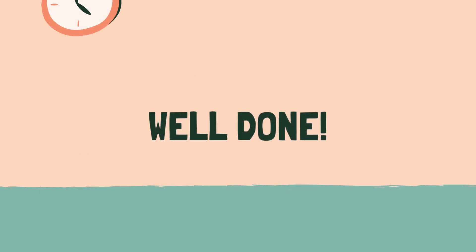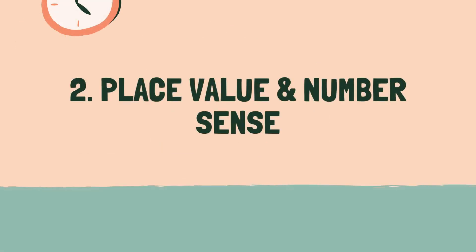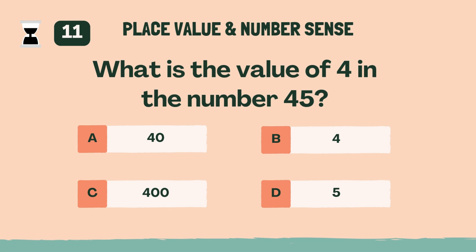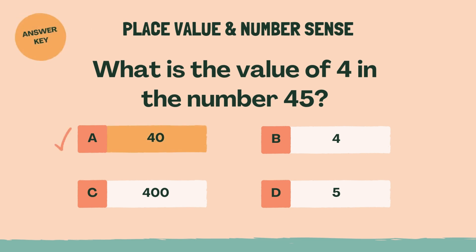Well done. Let's move on to the next category. Category 2: Place Value and Number Sense. 3, 2, 1, go. What is the value of 4 in the number 45? A, 40.